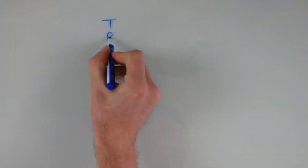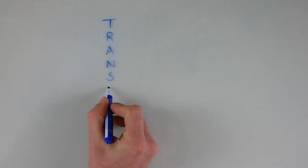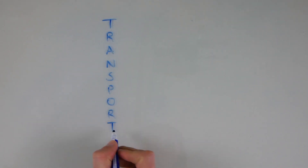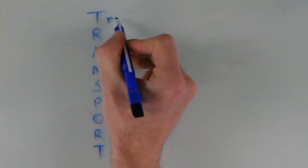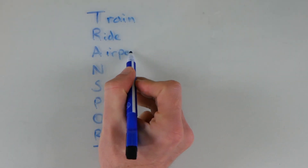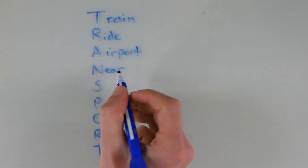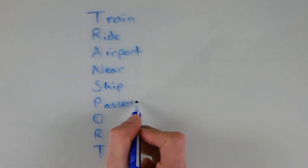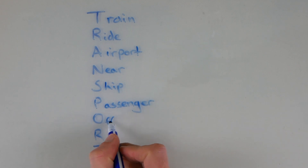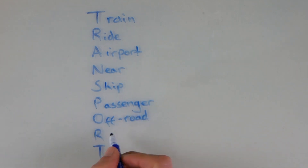Let's make it a little harder. This time we're going to use the word 'transport,' and now instead of writing whatever word they want, each word has to be related to the topic of transport. For example: train, ride, airport, near, ship, passenger, off-road, rail, and tram.